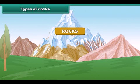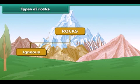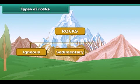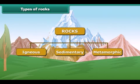There are three main types of rocks depending on how they are formed: igneous rocks, sedimentary rocks, and metamorphic rocks. Let's discuss about them in detail.